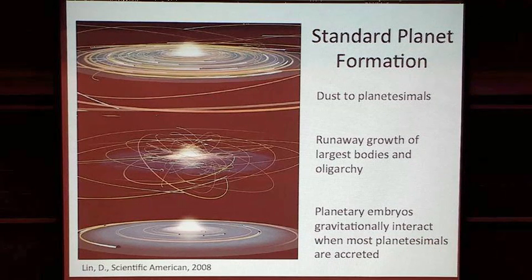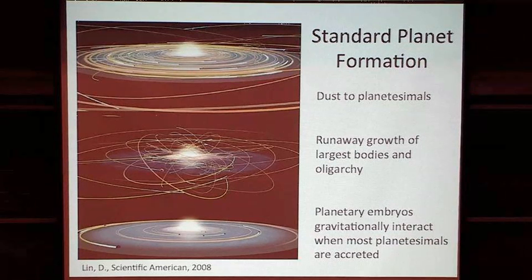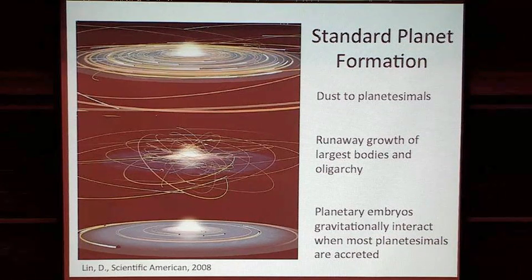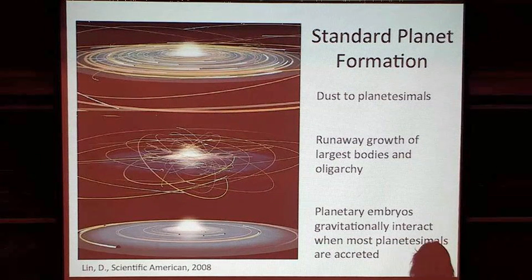As the planetesimals accrete via colliding with each other in a dynamically cold environment, the relative velocities between bodies are slow. The gas in the solar nebula acts as a damping force that keeps relative velocities low. Bodies accrete and the largest tend to run away in their growth by gravitational focusing effects. That transitions into a stage termed oligarchy, where the largest bodies dominate a particular annular radius in the solar nebula. Once the mass of the oligarchs exceeds that of the smaller bodies in the feeding zone, dynamical interactions between oligarchs can be felt, and they start perturbing one another. That transitions into the stochastic phase of planet formation — when giant impacts occur between planetary embryos or oligarchs.